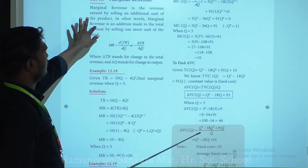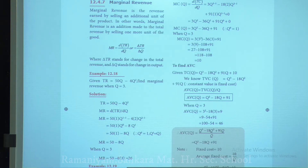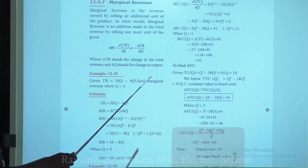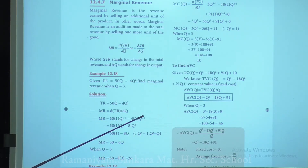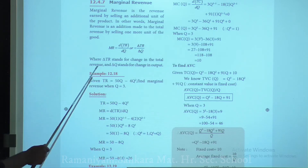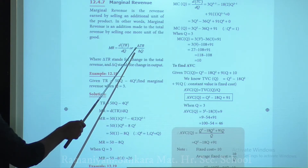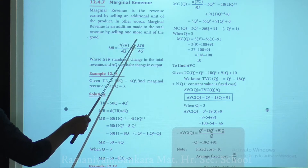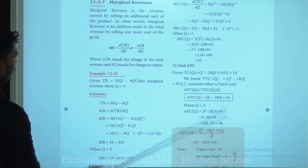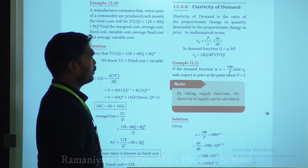Marginal revenue is the revenue earned by selling an additional unit of the product. In other words, marginal revenue is the addition made to the total revenue by selling one more unit of goods. MR = ΔTR/ΔQ, where ΔTR stands for the change in total revenue and ΔQ stands for the change in output.